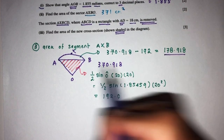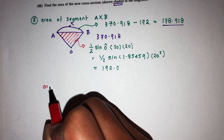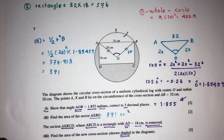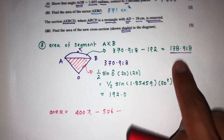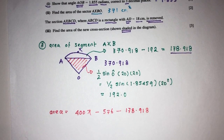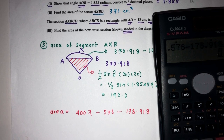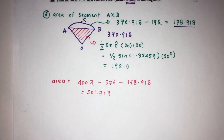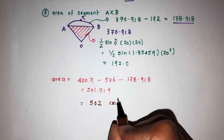Now we can find the final answer. The shaded area equals the whole circle minus the rectangle minus the top segment: 400π minus 576 minus 178.918, which gives 501.719. Corrected to three significant figures, that is 502 centimeters squared. That is the answer for part three.